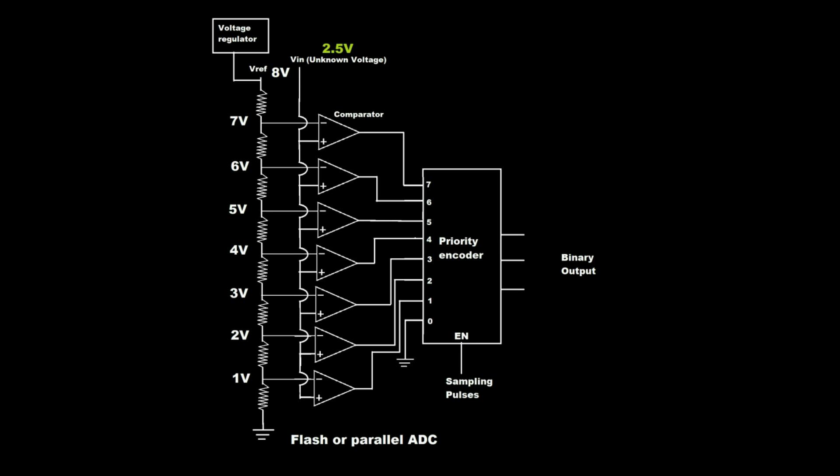Let 2.5 volts be applied to VIN. The comparators compare the voltage values. If the input voltage value is lower than the reference, the output of that comparator is set to 0. If the input voltage value is greater, the output of that comparator is set to 1.